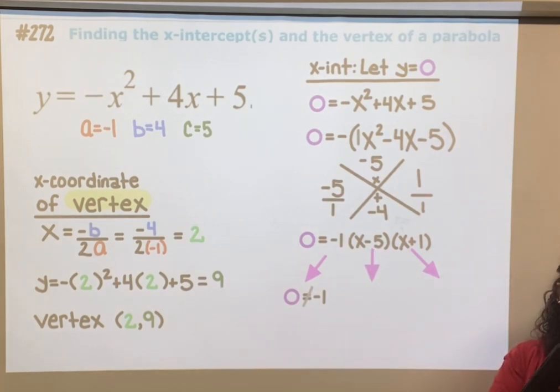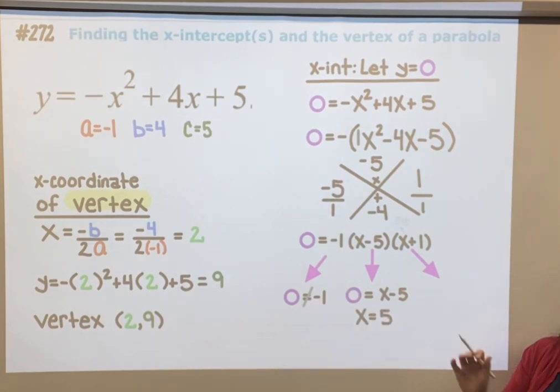I'm going to set x minus 5 equal to 0, add 5 to both sides, and I get 5. And then here, set x plus 1 equal to 0, subtract 1, and I get negative 1.